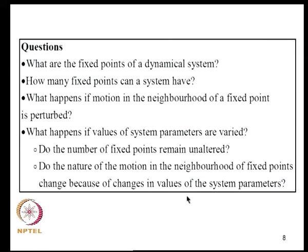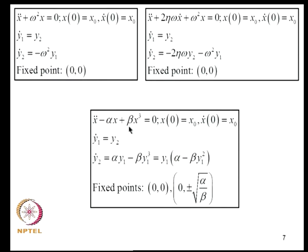What are these fixed points and what is their significance? What happens if motion in the neighborhood is perturbed — will it die out, grow, or remain unbounded? What is the role of system parameters in deciding the number of fixed points? For example, if β = 0 the system becomes linear with only one fixed point, but β ≠ 0 gives three fixed points. By changing β we change the number of fixed points. Do the nature of motions in the neighborhood of fixed points change due to changes in system parameters?